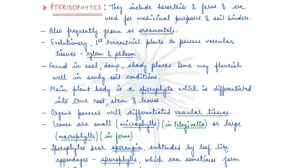Hey guys, welcome back to One Stop Biology. So till now we have completed almost half of chapter 3, wherein we have covered algae and bryophytes. We are basically dealing with NCERT class 11th chapter 3, and what we are left with are pteridophytes, gymnosperms and angiosperms. In this video we are going to cover pteridophytes and gymnosperms both.